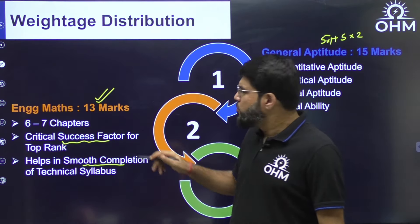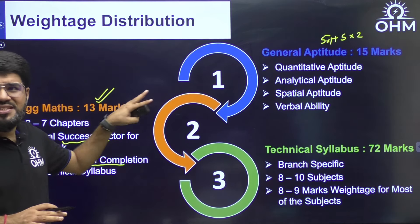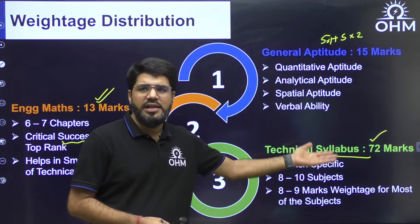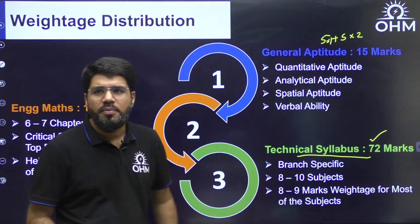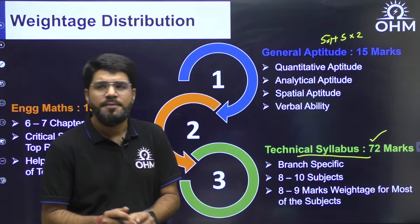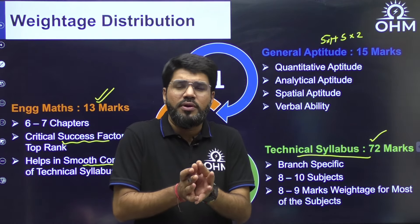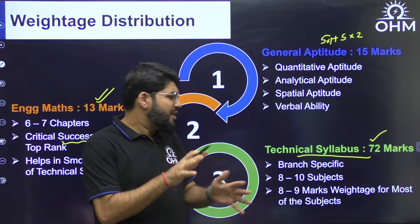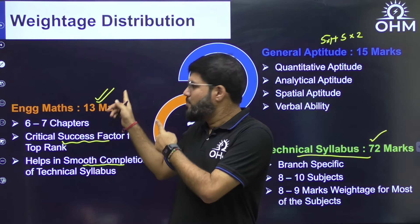The effort required to score 13 marks in maths is less than what is required to complete one technical subject fully, which has an average weightage of around 9 marks. That's why focusing on maths gives you more marks-gaining probability. So General Aptitude (15 marks) plus Engineering Maths (13 marks) equals 28 marks total, making these two strong rank boosters.